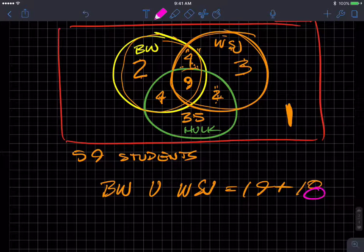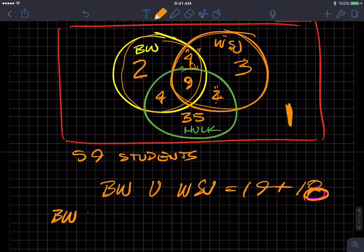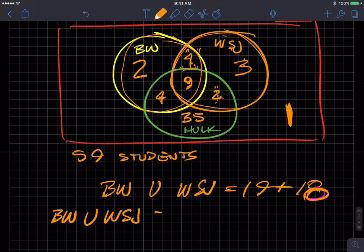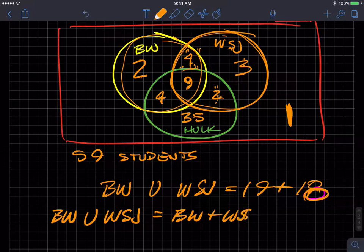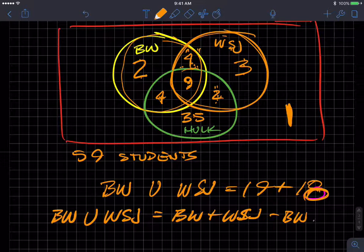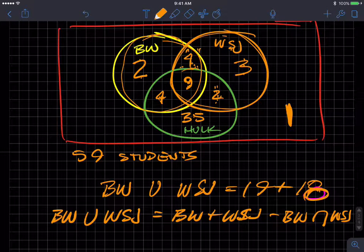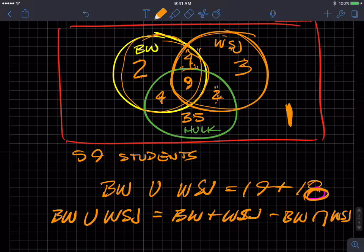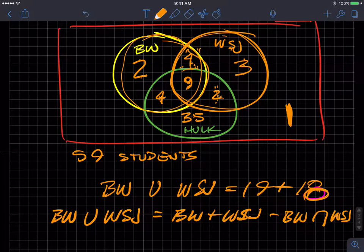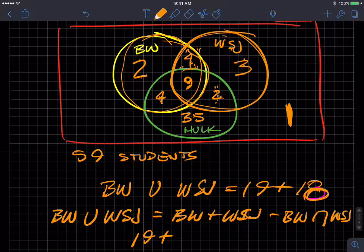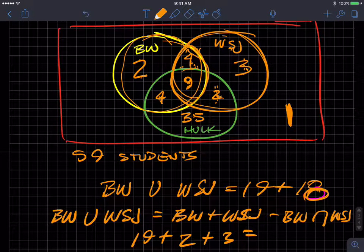So oftentimes this type of arithmetic needs to be adjusted so you can do it two different ways. You can think of it as Business Week union Wall Street Journal equals Business Week plus Wall Street Journal minus Business Week intersect Wall Street Journal. So then what you do is you'd add the two circles, but then subtract this overlap so you don't count it twice. The other way to do it is just add the numbers up that are inside the Venn diagram correctly. So we know that Business Week was 19 and then add two more and add three more so that you don't count this overlap twice.